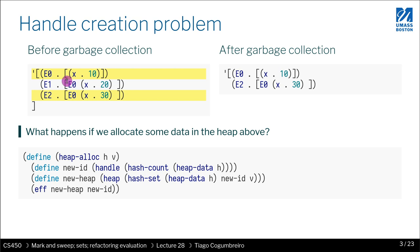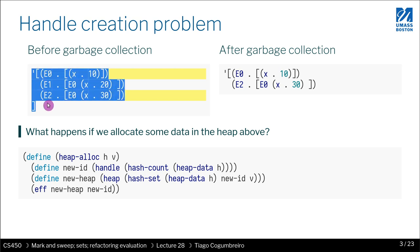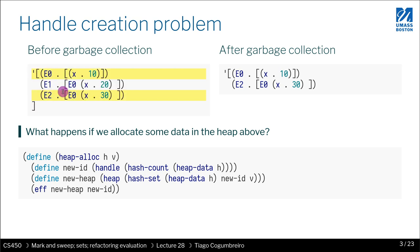So we define the heap — let's say this is our initial heap, where we have three environments. E0 is the root environment, E1 points to E0, and E2 also points to E0. After garbage collection, we would have the following memory: E0 and E2.